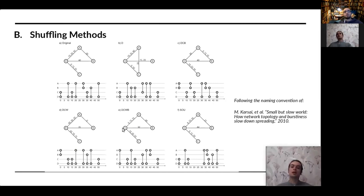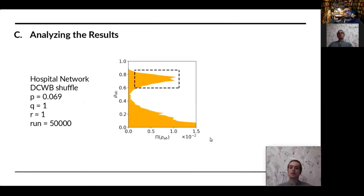We use these different types of shuffling to see their effect on spreading dynamics. This is a distribution of results for a specific case — a hospital dataset with a type of shuffling and a set of parameters. P is our control parameter. The y-axis shows rho AB, the number of agents recovered from both diseases at the end of the simulation. The x-axis is the frequency at which that occurs. If you plot this histogram for different values of control parameter P, you get a heat map.